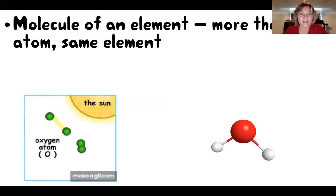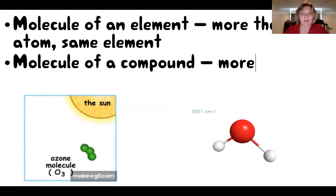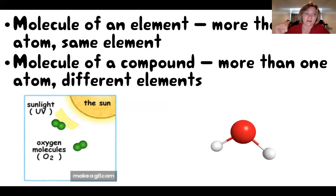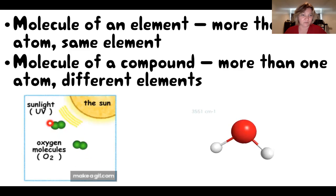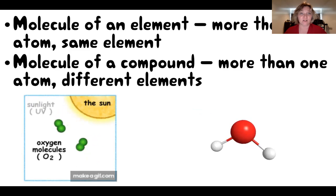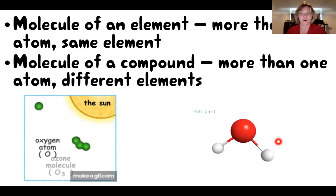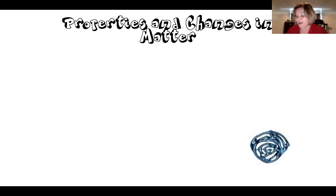There are two kinds of molecules. You have a molecule of an element, which is when you have the same kind of atom, and you have a molecule of a compound where you have different elements. Here I have two molecules of elements: oxygen, which is two oxygen atoms, and ozone, which is three oxygen atoms — both are molecules of an element because it's all oxygen. On the right-hand side I have a water molecule, made of one oxygen atom and two hydrogen atoms. They're different types of atoms, so that's a molecule of a compound.